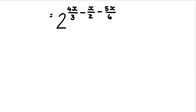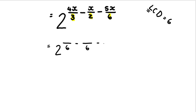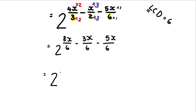Now something very important: if the question says don't use your calculator, we need to do this properly. How am I going to subtract these fractions? Remember, when we add or subtract fractions, they need to be over the same lowest common denominator. What number can 3, 2, and 6 all divide into? 6. So my LCD is 6. I write all of these fractions over 6. How do I make 3 become 6? Multiply by 2 — what you do to the bottom you do to the top, so 4x times 2 is 8x. How do you make 2 become 6? Multiply by 3 — so I've got 3x at the top. The last one you're multiplying by 1, so it stays 5x. The denominators are all 6. Then 8x minus 3x is 5x, minus 5x is no x's. So it's 2 to the power of 0, and anything to the power of 0 is 1. That's your final answer.